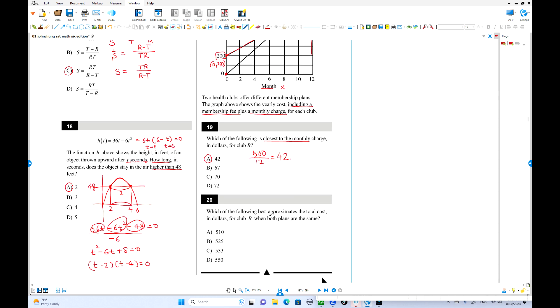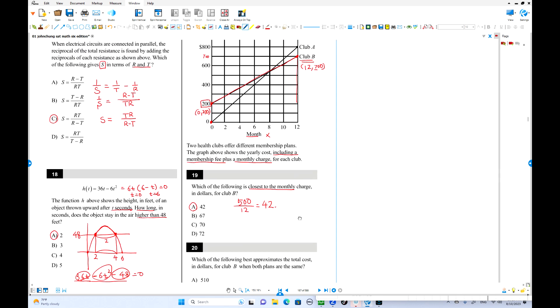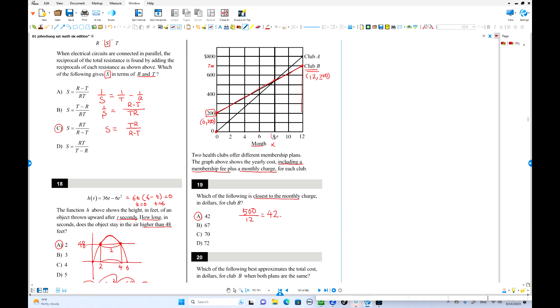Number 20. Which of the following best approximates the total cost in dollars for club B when both plans are the same? Both plans are the same at this point. When x equals 8, they are the same. We know already. So we can find the equation. Only one of these lines, I like this one. This is 700, 12. That's the slope. Or you can use this one. This one is how much? 500 over 12 x, and plus initially is 200.